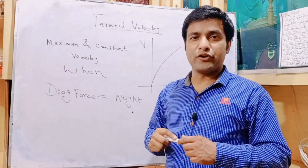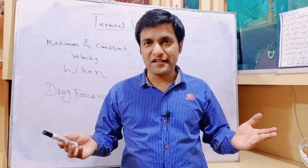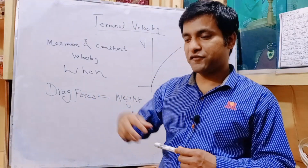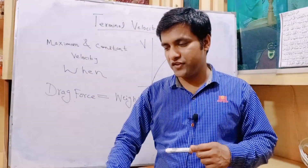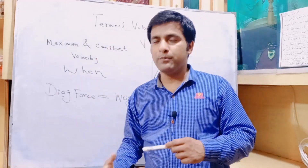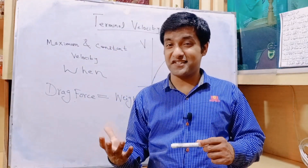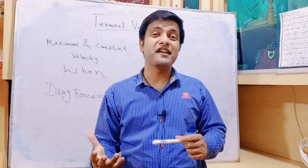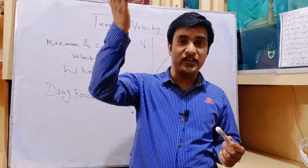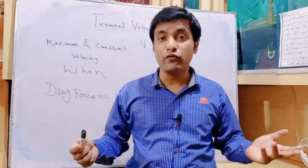The paratrooper faces air resistance. What is air resistance? Air resistance is a frictional force that always opposes the motion. So the paratrooper is falling downwards — his weight is acting vertically downwards, but the frictional force, air resistance, is applying some force in the opposite direction upwards. That is basically drag force.